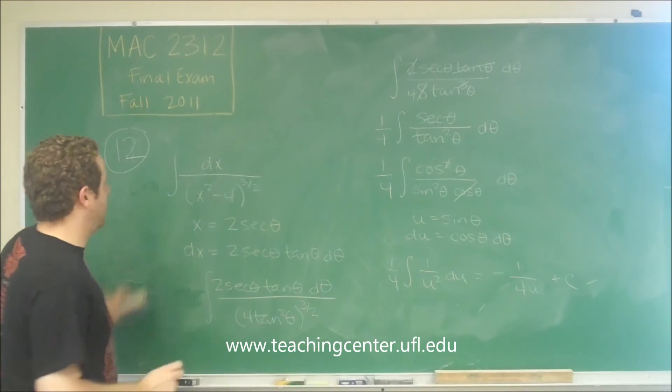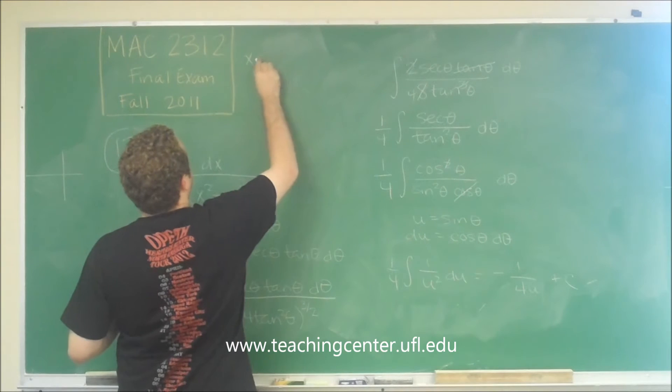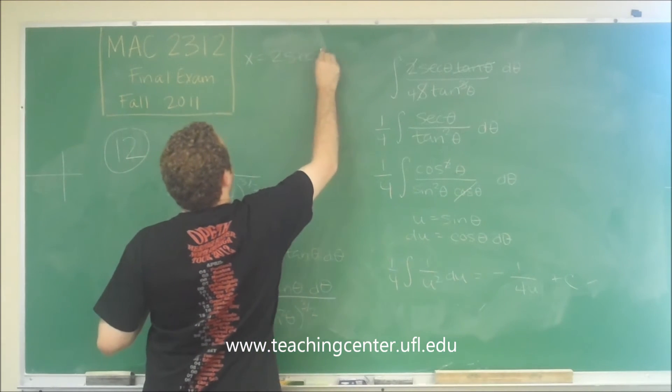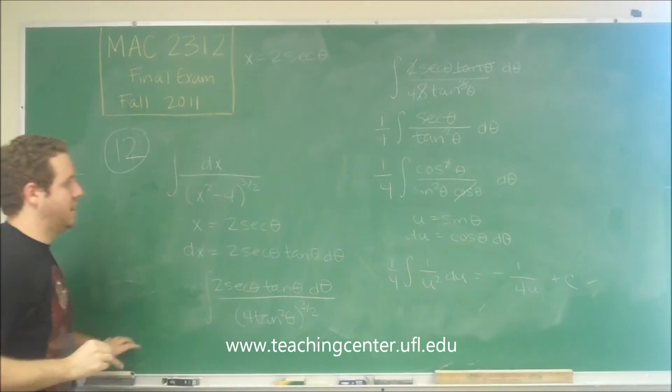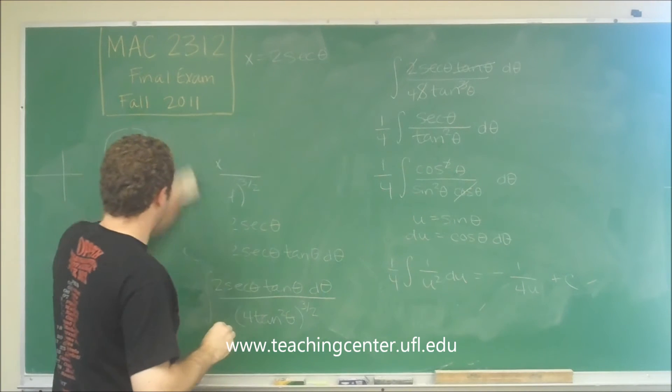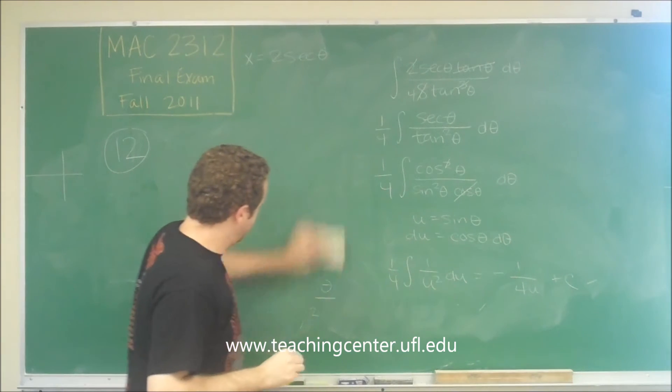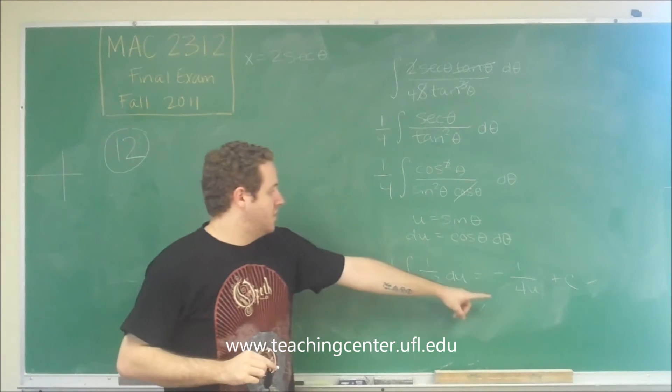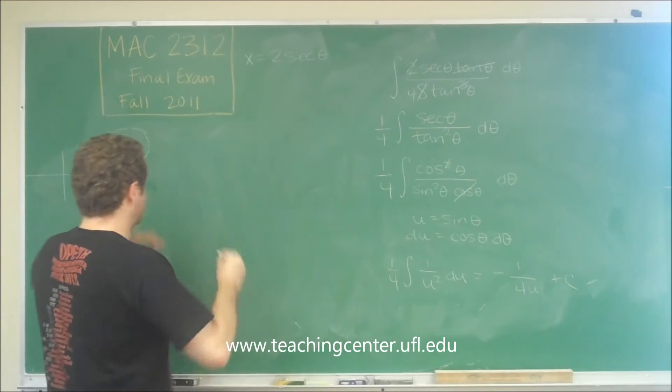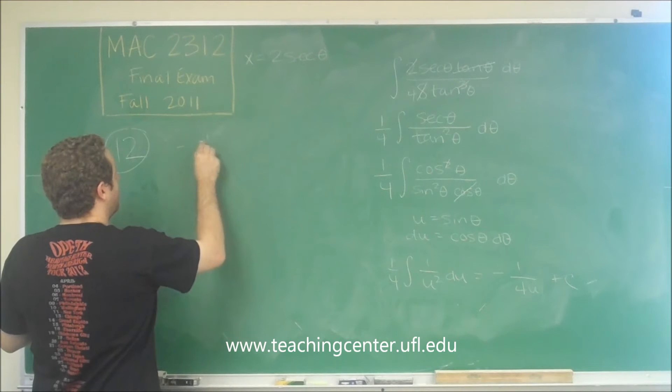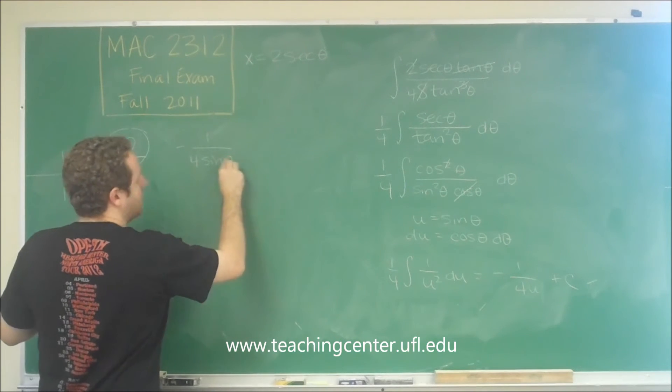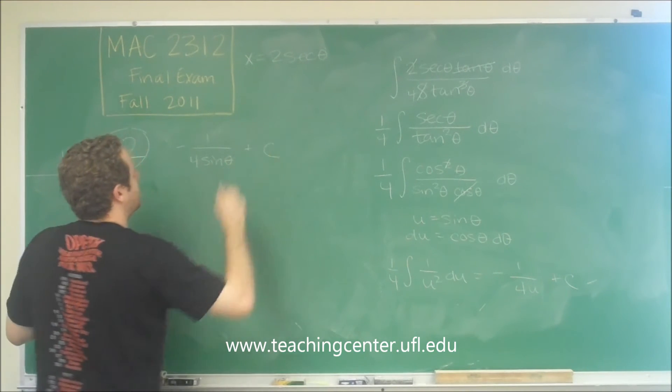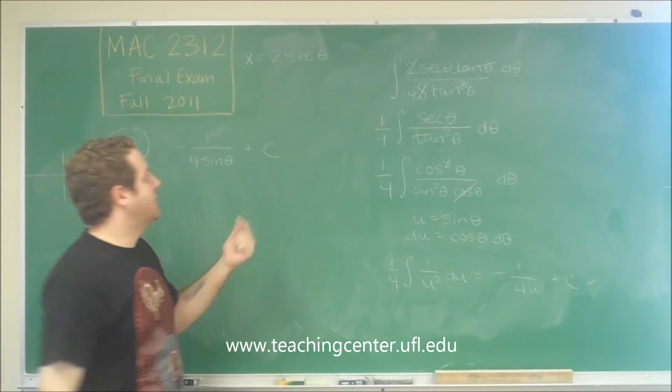And I'm going to rewrite our substitutions up here just so that I remember because we're going to have to do them one more time. Okay, so first we need to plug in for u. We have u there. We know that u is sine theta. So we get negative 1 over 4 sine theta plus c. But now we need to go from theta to x.